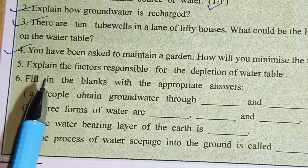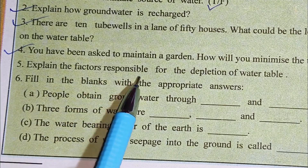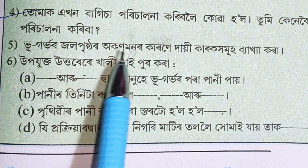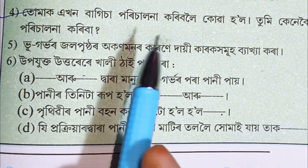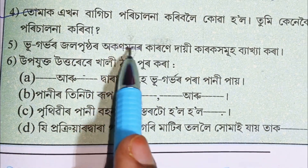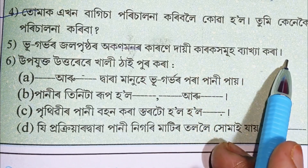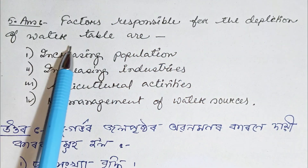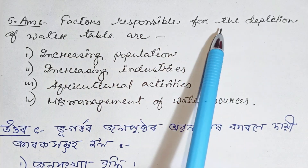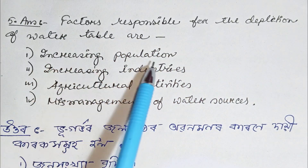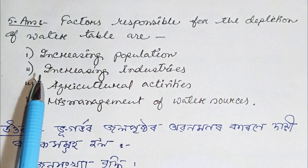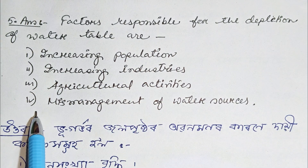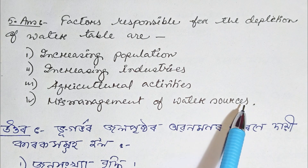Question 5: Explain the factors responsible for the depletion of the water table. The factors responsible for the depletion of the water table are: Number 1, increasing population; Number 2, increasing industries; Number 3, agricultural activities; Number 4, mismanagement of water sources.